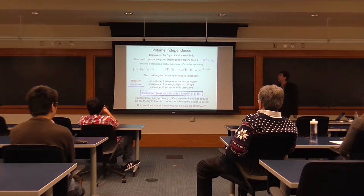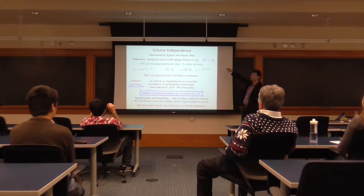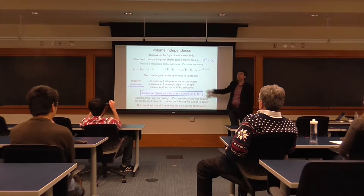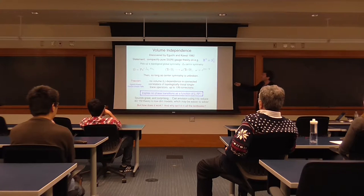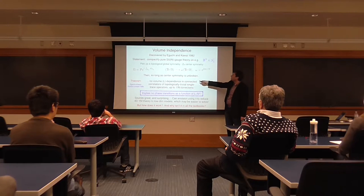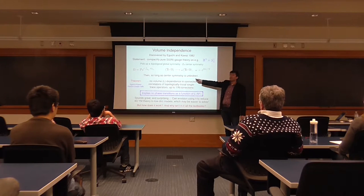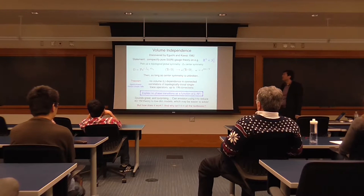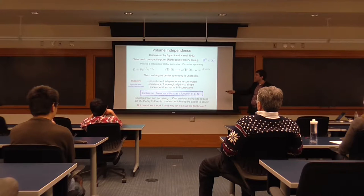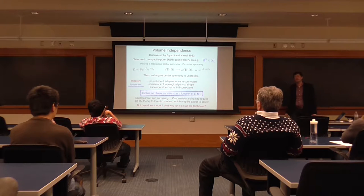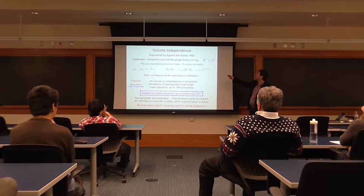The Z_N center symmetry acts as follows. If you have a compact direction (circle), you can wrap a Wilson loop — a holonomy Ω — around it. Traces of powers of this holonomy are gauge-invariant variables in the theory. Under the center symmetry, they transform by multiplication by e^(2πi/N), the N-th root of unity. The expectation values of these operators parameterize which phase you're in — they're order parameters for the realization of the center symmetry. What these guys proved is that if this center symmetry is not spontaneously broken (i.e., it is preserved), then there is no volume dependence — volume being L — in connected correlators of topologically trivial single-trace operators, to leading order in 1/N.